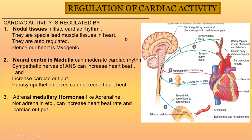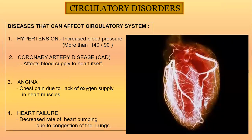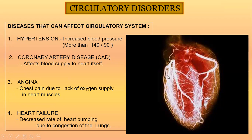This maintains constant homeostasis — the body's internal environment. There are various disease conditions of the circulatory system, including hypertension, coronary artery disease, and heart failure. Hypertension is increased blood pressure, which can block the heart muscles.